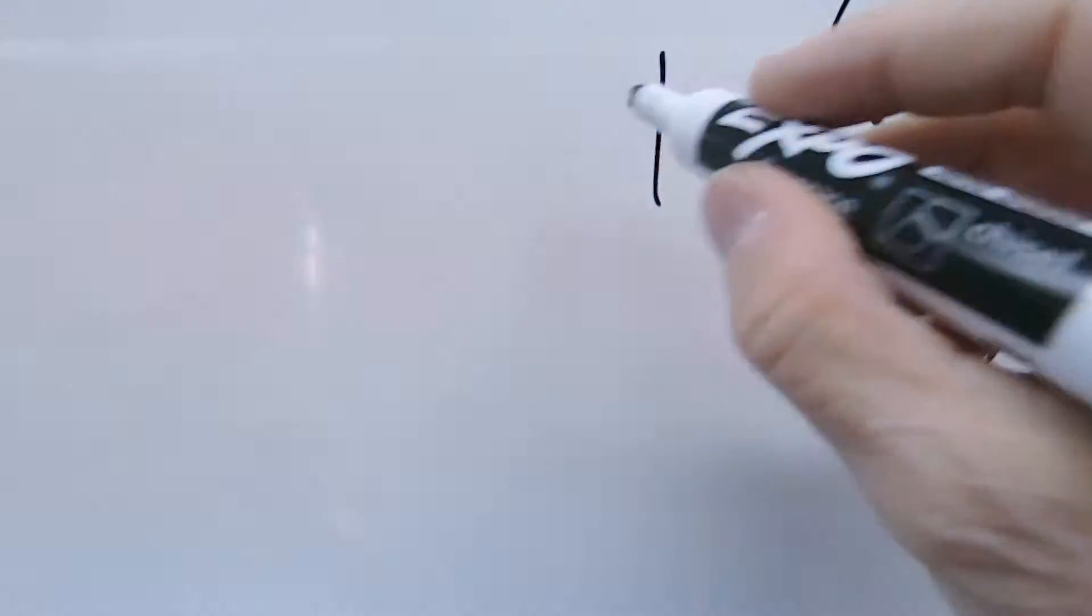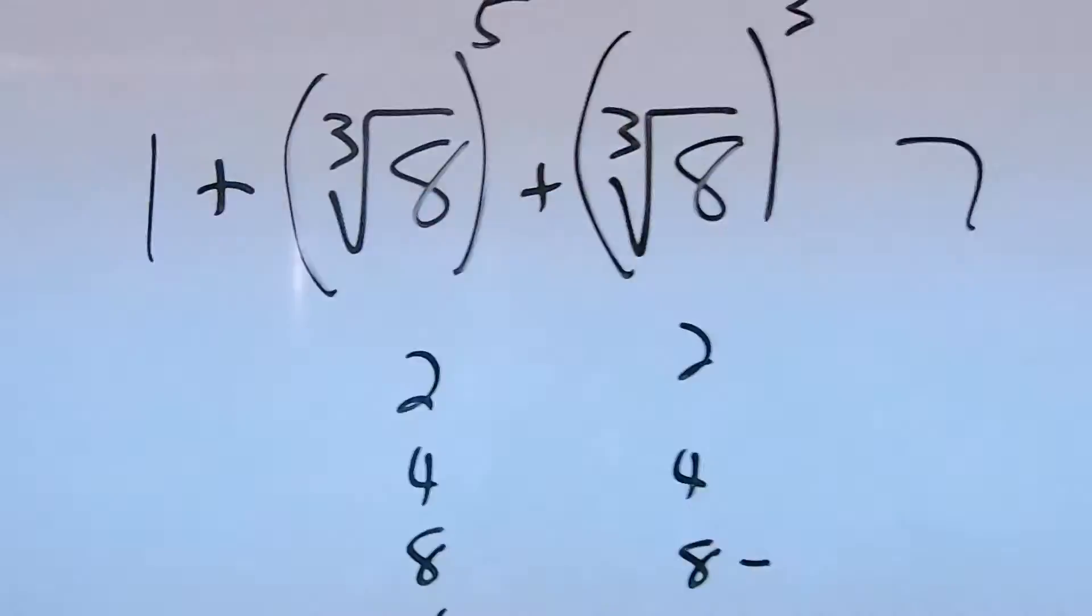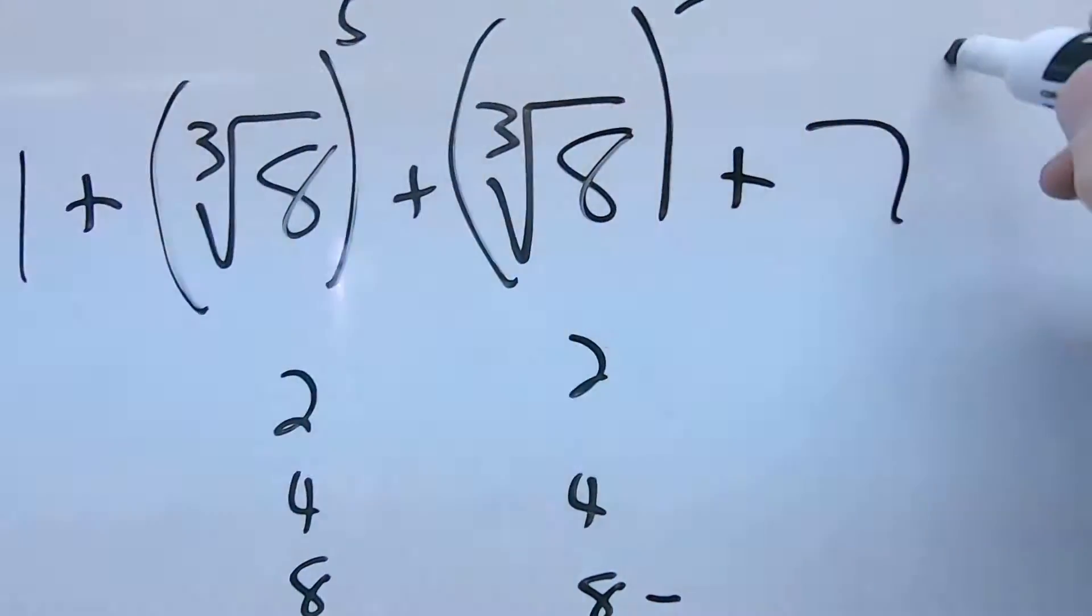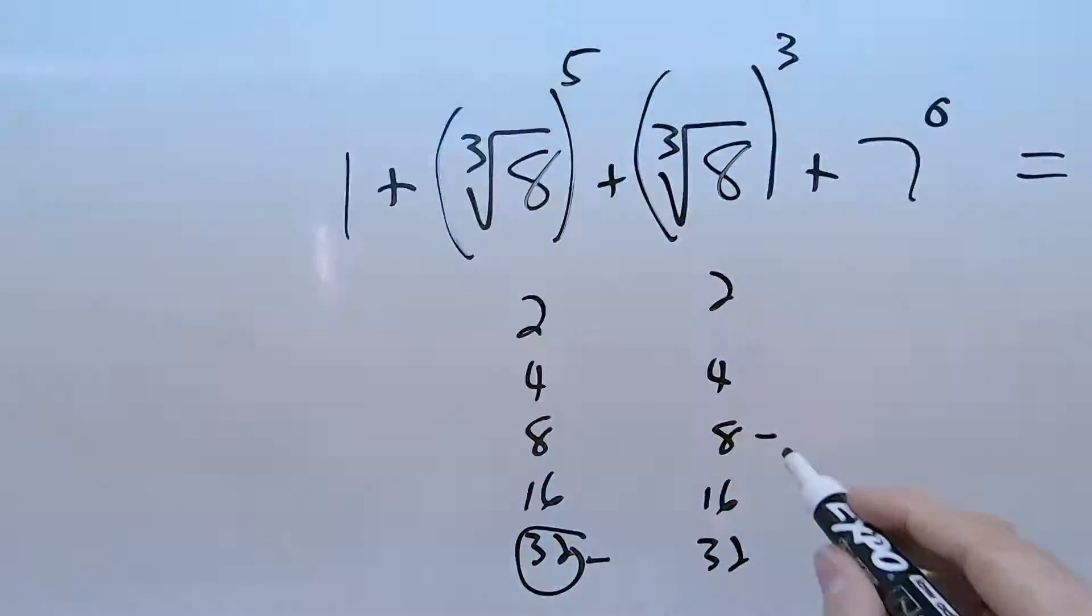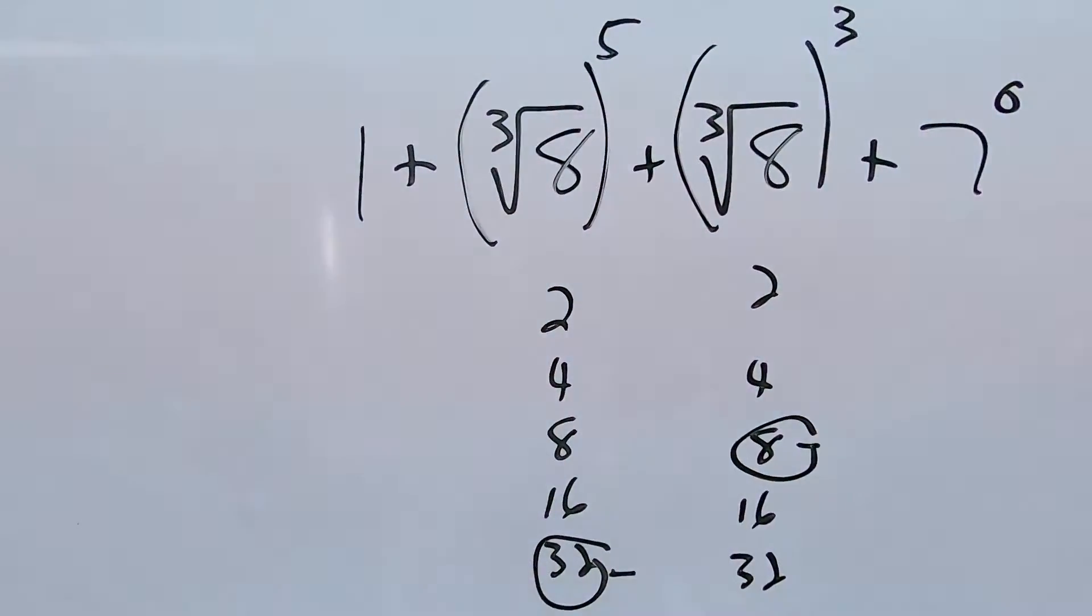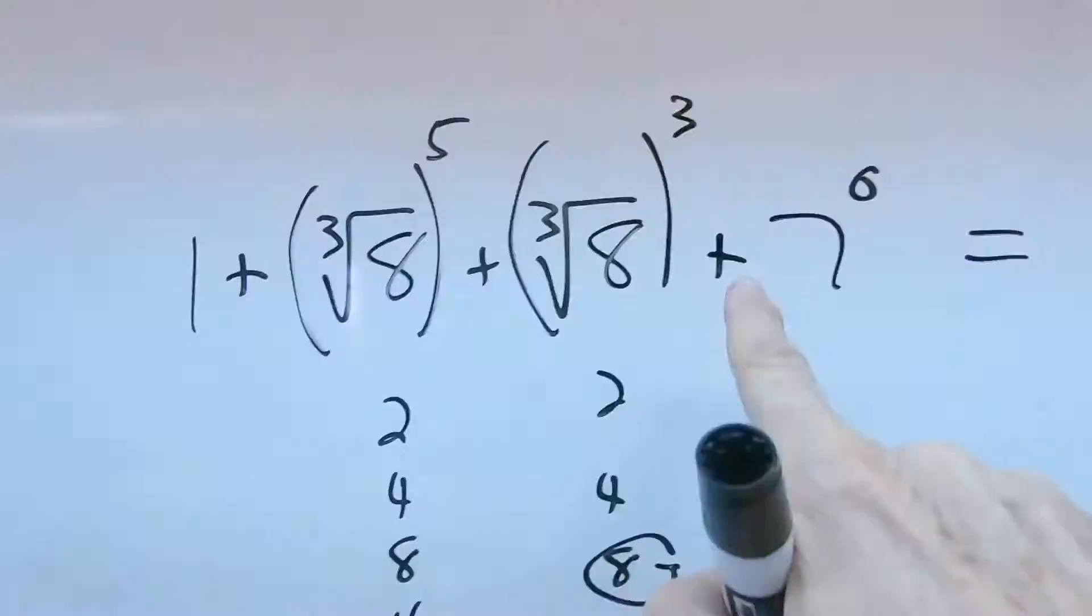There's 40, and then we can add on 1 plus 1 more, plus another one, 7 to the 0. So that's 32 and 8, which is 40, 41, 42.